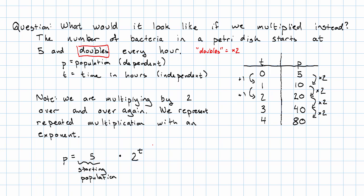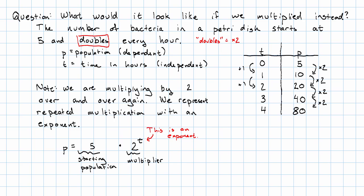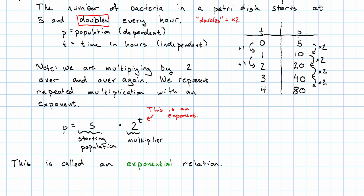Notice, this t is an exponent. And the 2 then, this is called just the multiplier. It's what we're multiplying by over and over again. The relationship described by this equation and this table is called exponential. Why exponential? Because it's got a variable in the exponent.